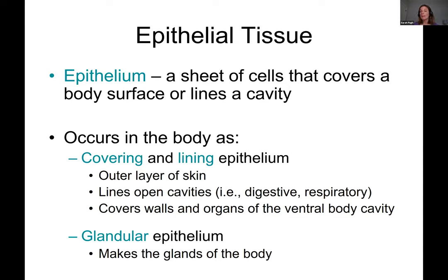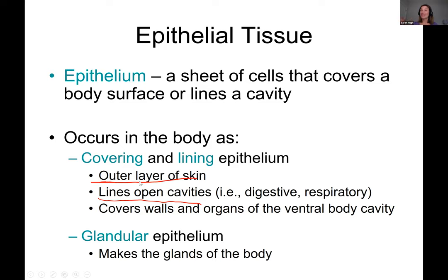We're going to start on epithelial tissue. Epithelium is a covering or lining — like your skin — and it lines open body cavities like the digestive cavity, mouth, respiratory tract, nose, and urogenital tracts. It also covers the ventral body cavity through serous membranes. We also have glandular epithelium in our glands, which we'll talk more about in the next chapter when we cover the skin.